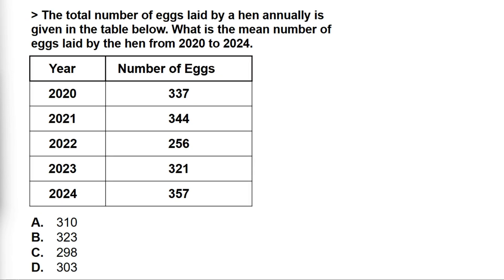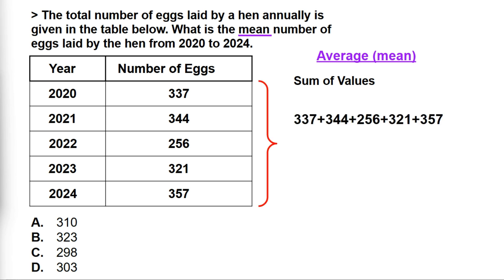In this question, we are asked what is the mean number of eggs laid by the hen from 2020 to 2024. To find the mean, you have to get the sum of the values by adding all the eggs laid each year by the hen, divided by the total number of values, which in this case is the total number of years. Let's count: 1, 2, 3, 4, 5 — that's the total number of our values, 5.